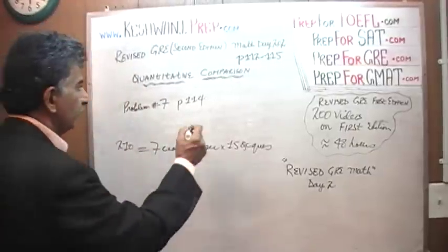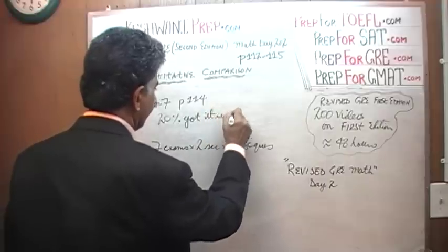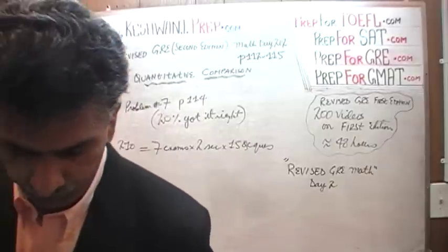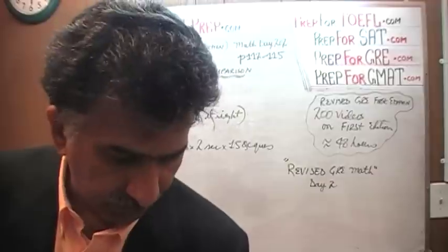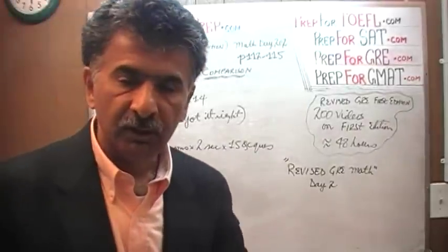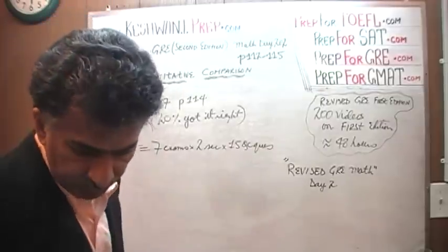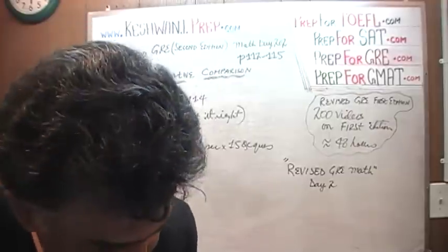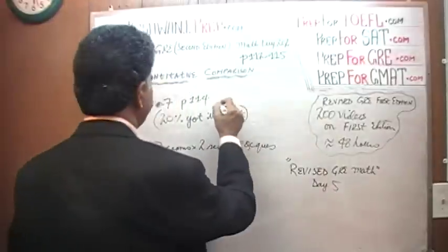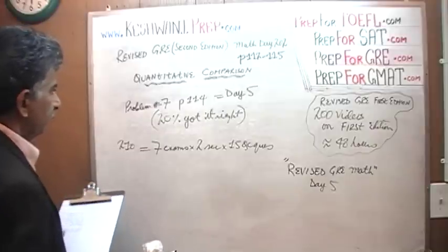When problem number 7 appeared on the real exam for the very first time, only 20% of test-takers got it right — 80% of people who took that particular exam missed it. But if you are interested in watching the solution to this problem, and how to do it in an efficient and smart manner, just type in the tag 'Revise GRE Math day 5' and you can watch the solution there.